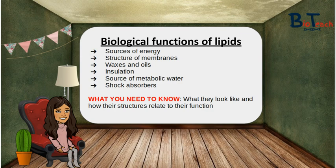Waxes and oils secreted onto the surfaces of plants provide waterproofing in plants and animals to stop water loss. Fat in animals acts as a shock absorber too. Organs such as kidneys can be prone to bumps and shocks and are cushioned with a nice layer of fat to protect them. Lipids are a source of metabolic water also. During respiration, stored lipids are metabolized for energy, producing water and carbon dioxide. And lastly, stored lipids provide insulation — increased body fat levels in winter reduce heat losses to the environment.